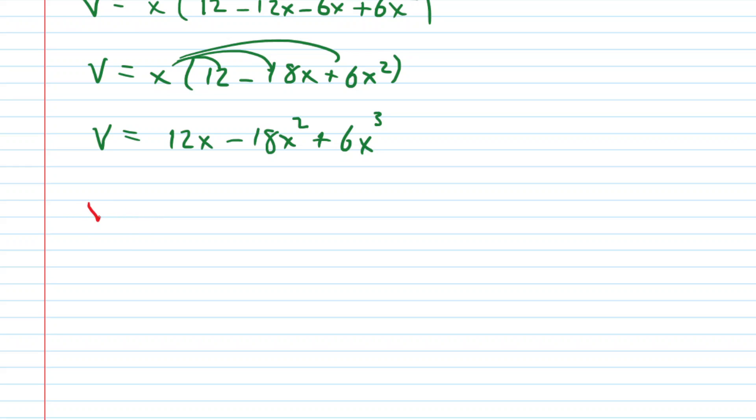So your next step would be to calculate the derivative of our volume equation. Now the derivative of 12x of course is just 12 minus, we're going to do a power rule here. Multiply 2 times 18, that gives us 36, and then this becomes x to the power of 1 because you have to subtract 1 from the power. Similarly, 3 times 6 is 18, and then we're going to have x to the power of 2. So that's our derivative and what we do next is set that equal to 0.